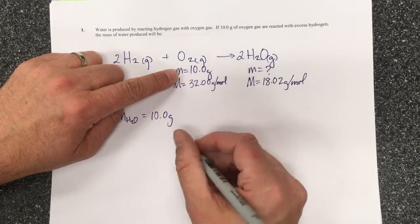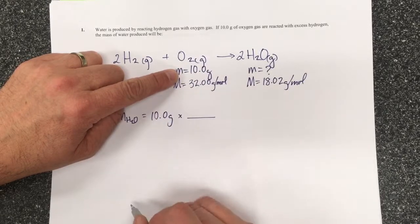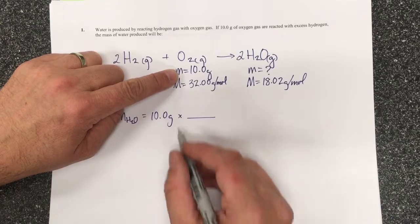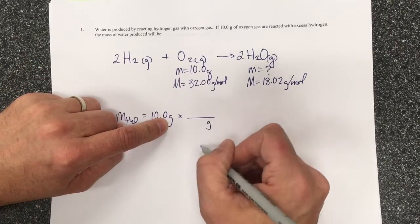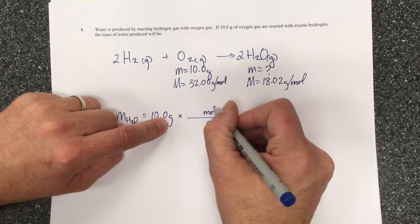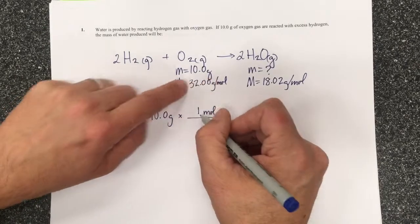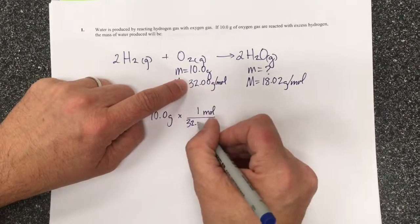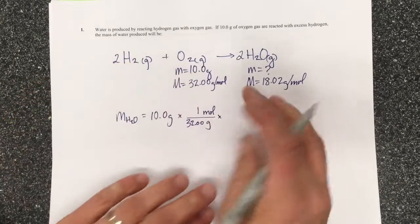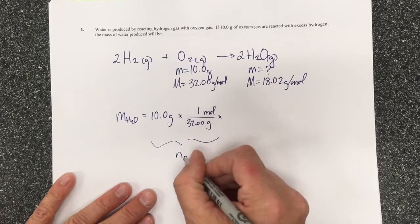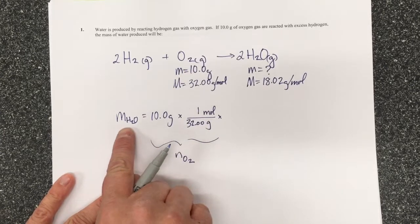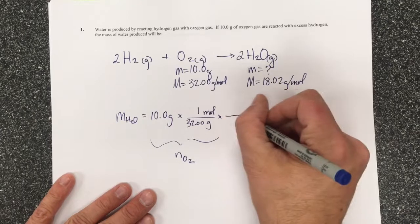I'd like that to be chemical amount or mole, so to cancel out my grams I put the grams in the denominator and mole in the numerator. One mole is 32.00 grams, so this gives me the n of O2. But I don't want the n of O2, I want the n of H2O.